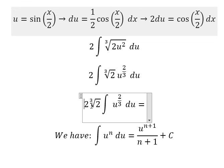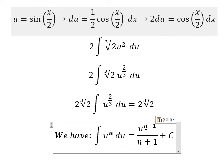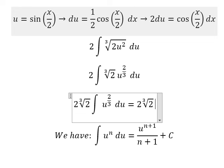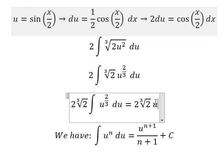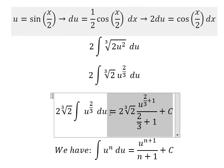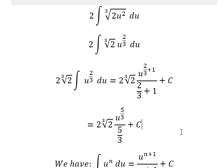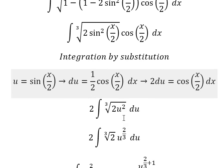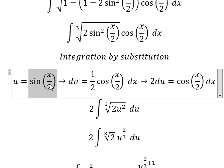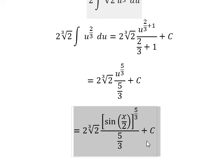Now we have the final answer in here. This one we put for n. So we have n plus 1. So we can apply the formula in here. This one we have 5 over 3. About u, that is about sine of x over 2. And here is the final answer.